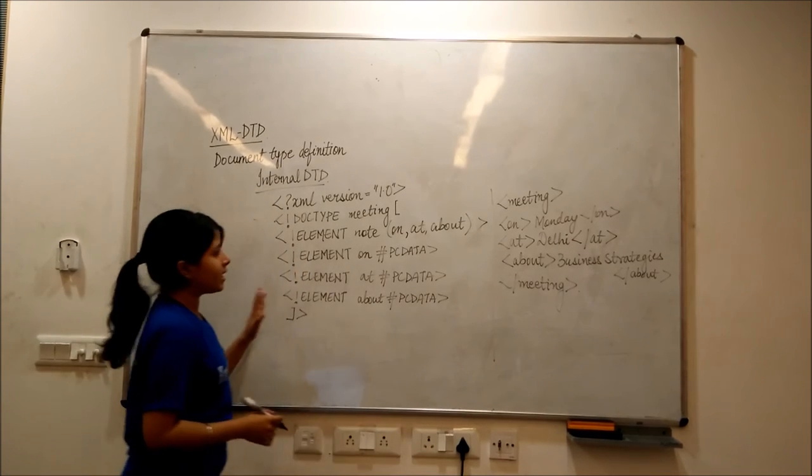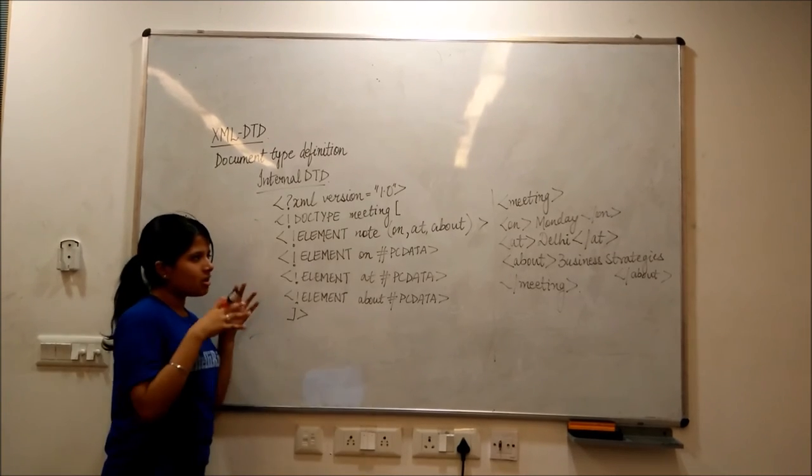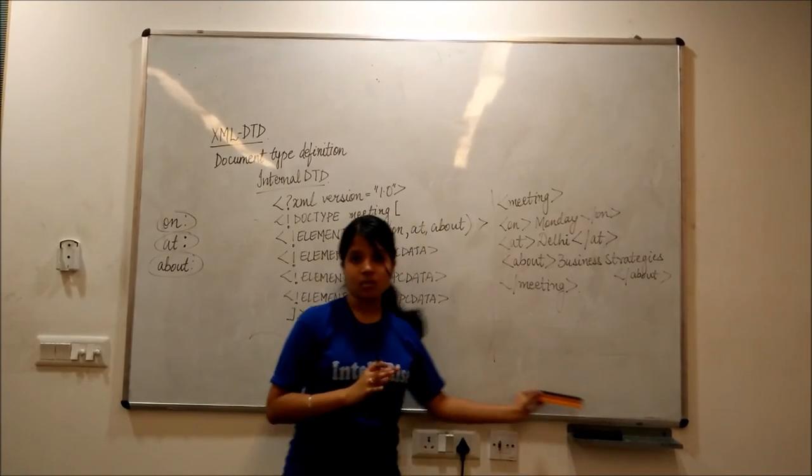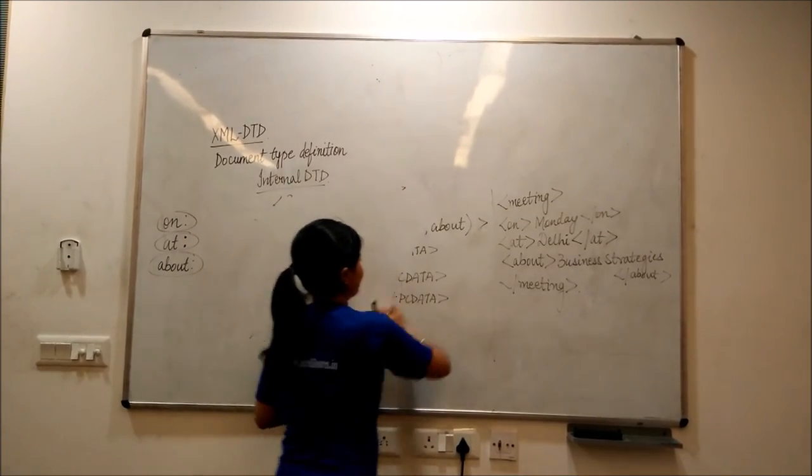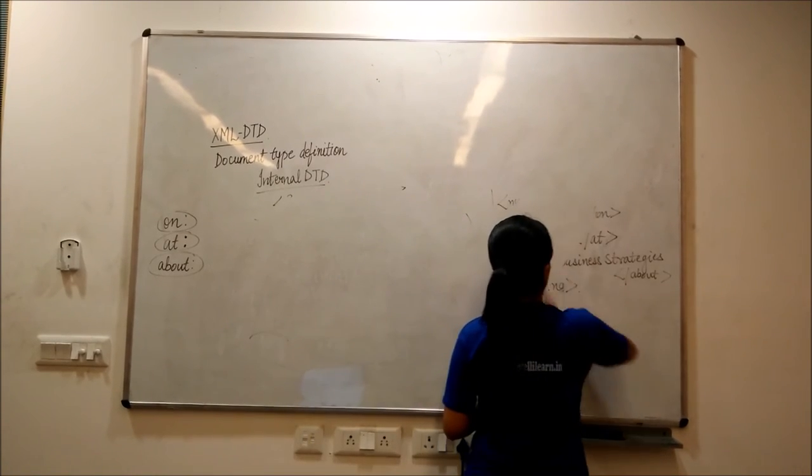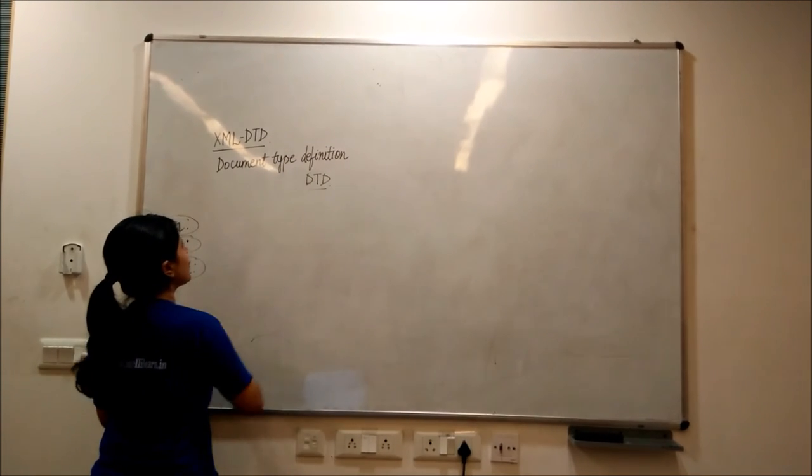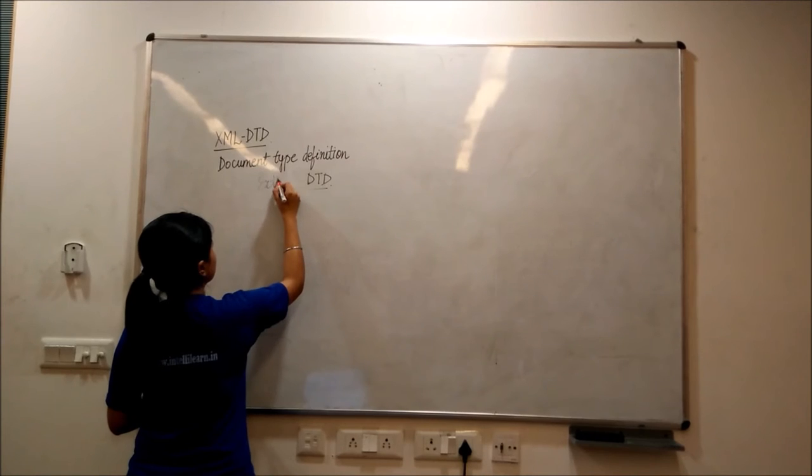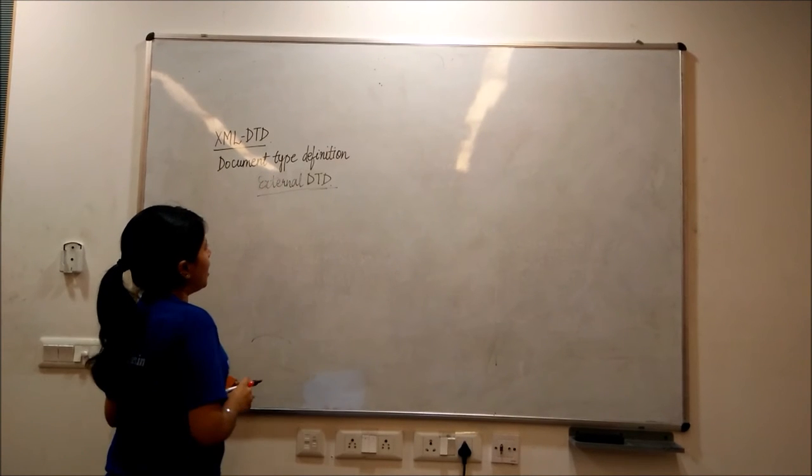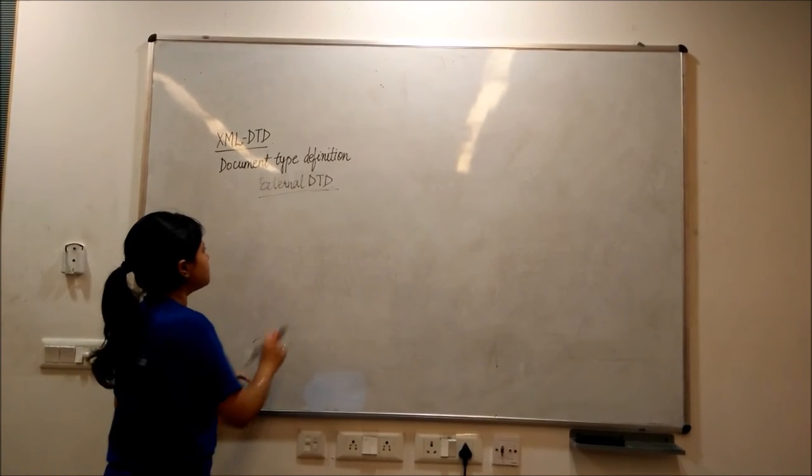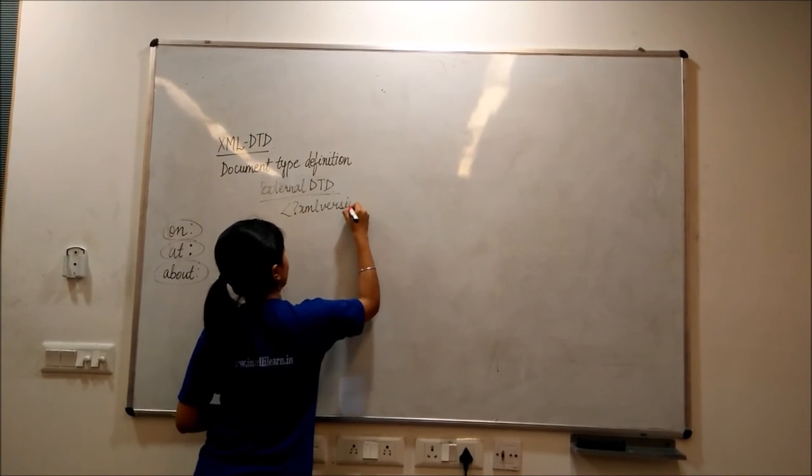Well, this is about the declaration in internal DTD. Now, let's understand the same concept in external DTD. In external DTD, what we'll do is first, I'll write my XML version, which is 1.0.